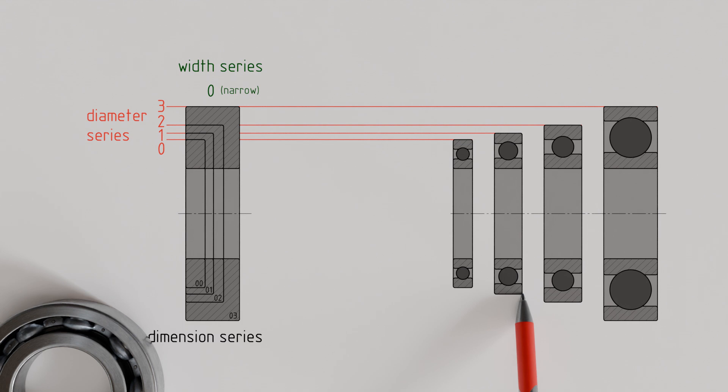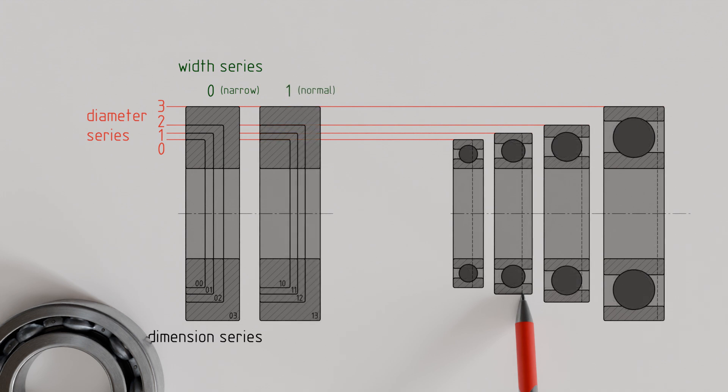In contrast, bearings with width series 1 are overall somewhat wider. Note that the outer diameters within the individual diameter series from 0 to 3 do not change. For a given bore diameter, a bearing of diameter series 2 always has the same outer diameter regardless of the width series.